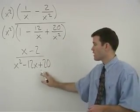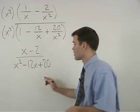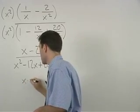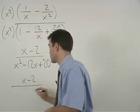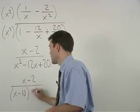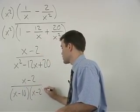Notice that our denominator factors. So we have x minus 2 over x minus 10 times x minus 2.